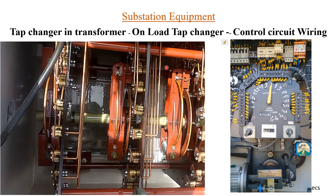This is the inside of the OLTC inside the transformer. You can see this is the diverter switch that we were talking about, and these are different kinds of tappings with all different resistance values you can see over here. This is the outside of the DM box.